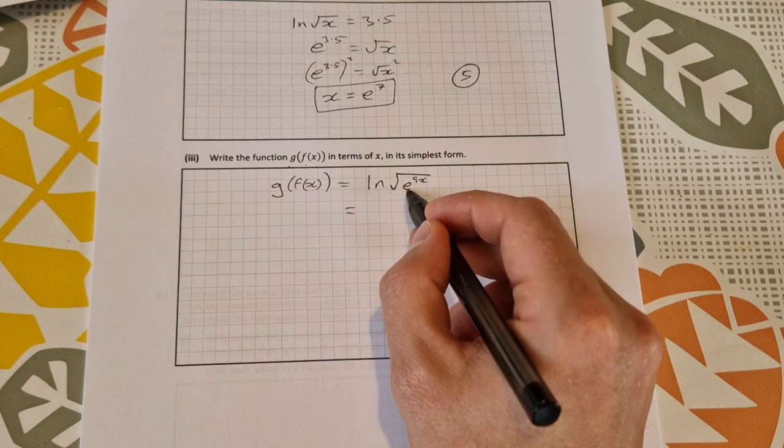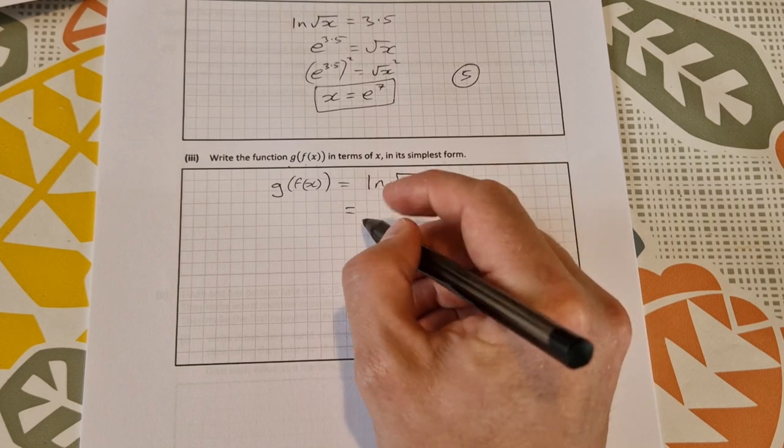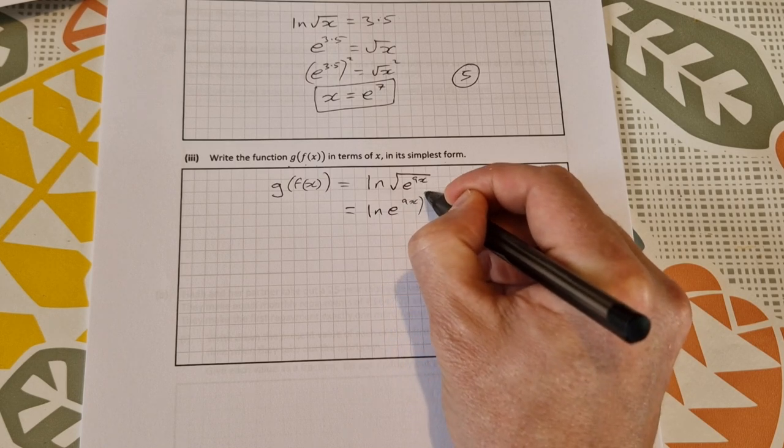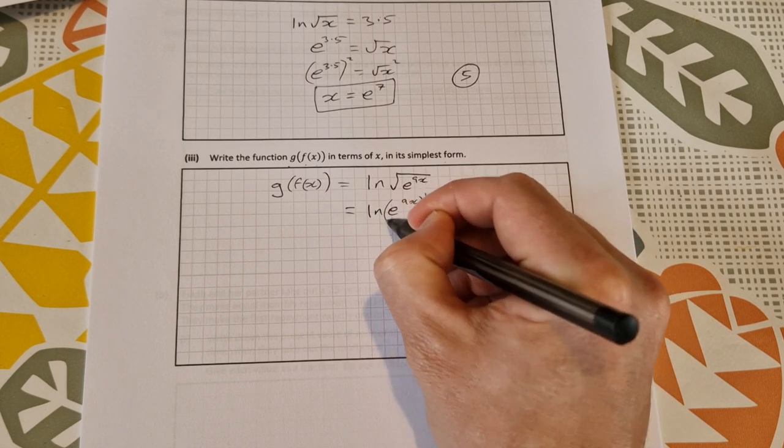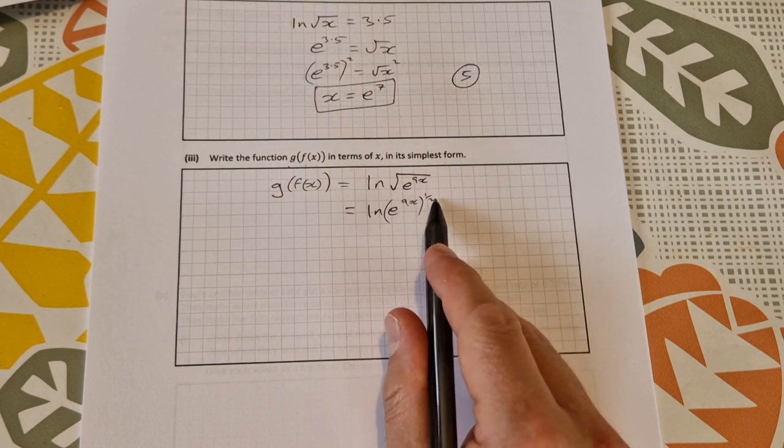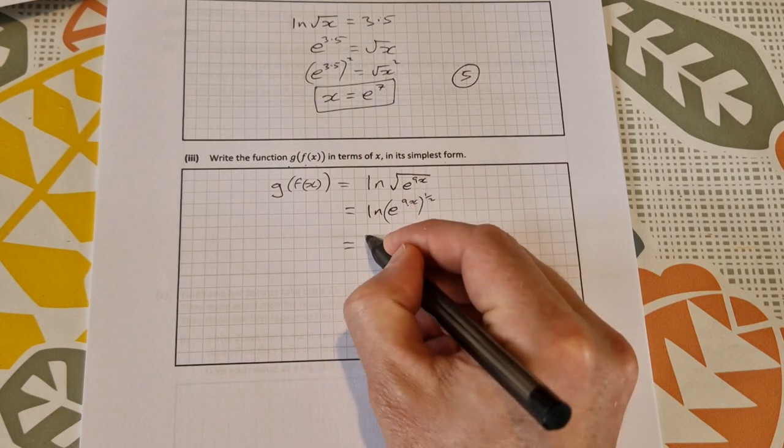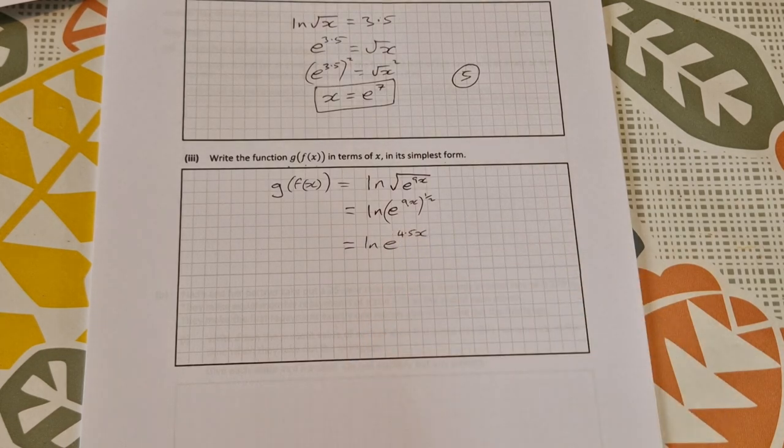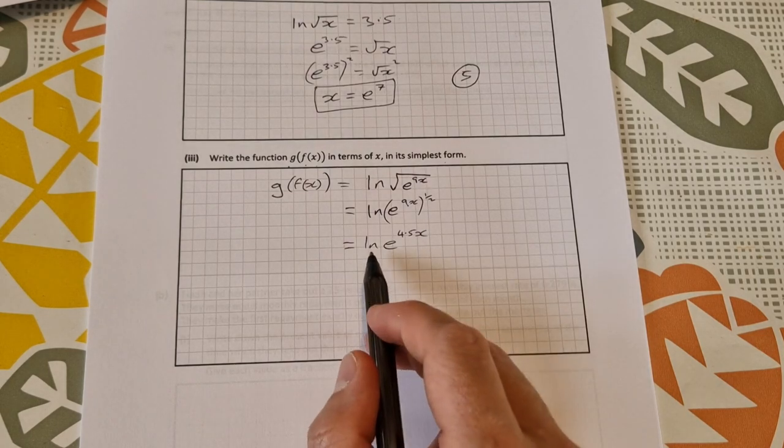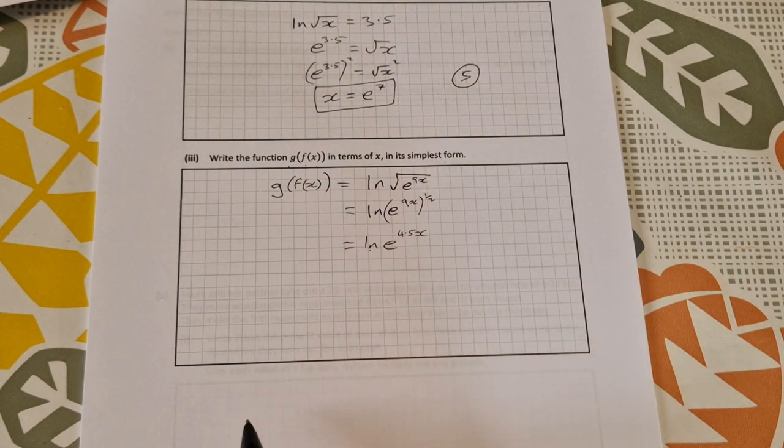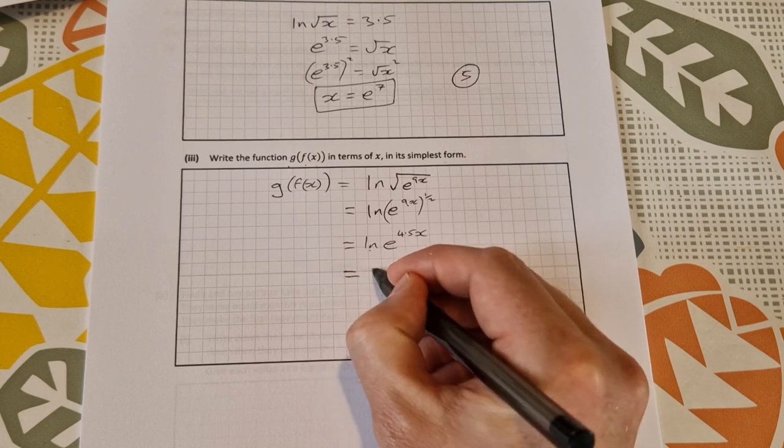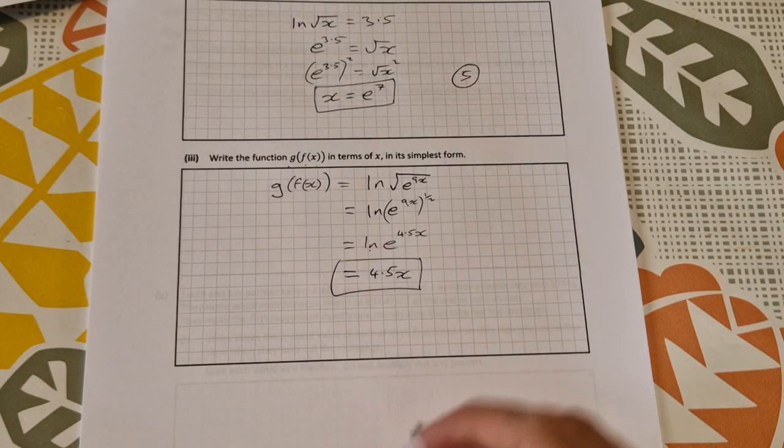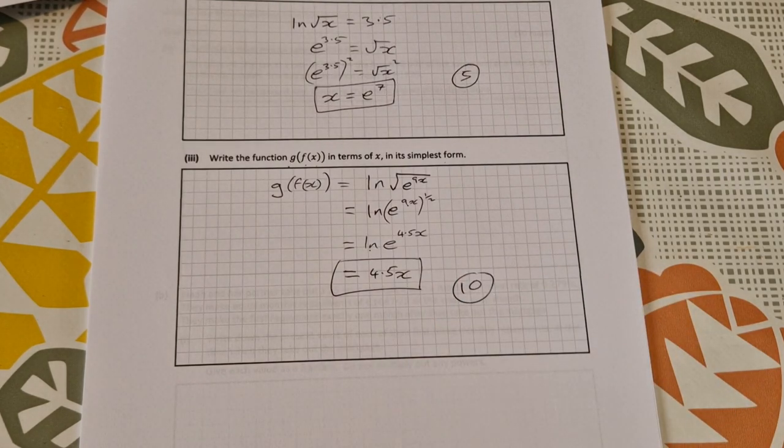The square root of e^(9x) is e^(9x) to the power of 1/2, which gets rid of the square root. So 9x to the power of 1/2—you multiply the powers—so that's ln(e^(4.5x)). That's made it a good bit simpler. And then we also have ln and e, which cancel each other out, so it simplifies down to just 4.5x. That is the answer, and that's worth 10 marks.